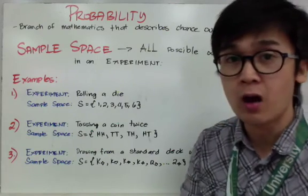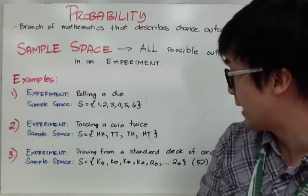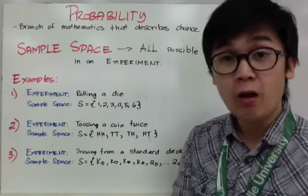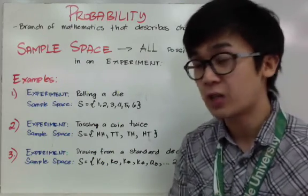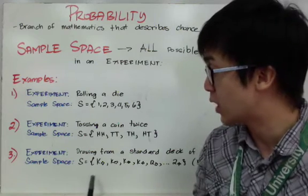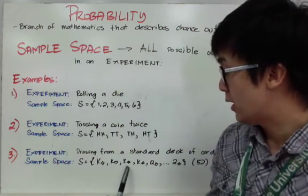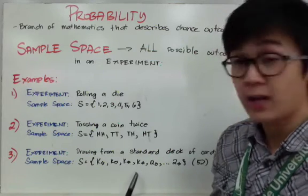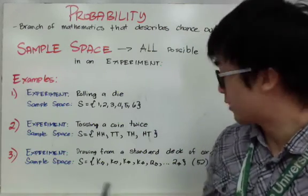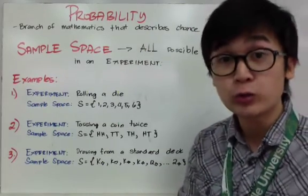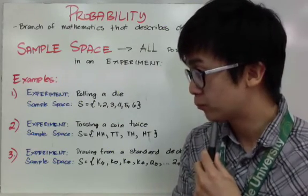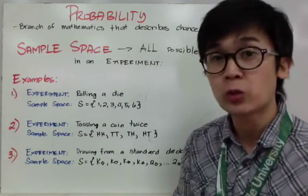In the third experiment, we have drawing a card from a standard deck of cards. You should be familiar with the standard deck of cards — it has four suits and 52 cards in all. The sample space includes every card: king of diamonds, king of hearts, king of clubs, king of spades, then queen of diamonds, and so on, up until you get to the last card. You should know what a standard deck of cards is to answer probability questions involving one.